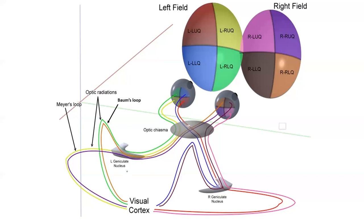Posterior to the lateral geniculate nucleus, we're now dealing with up and down, whereas anterior to the LGN, we were just dealing with left and right. However, we're still dealing with left and right — we're just adding up and down. Looking at the colors of these fibers: the left Meyer's loop is responsible for the right upper quadrant of each eye, and Baum's loop is responsible for the right lower quadrant of each eye. When speaking of things posterior to the LGN, you can think of them as always reversed and inverted — completely flipped.